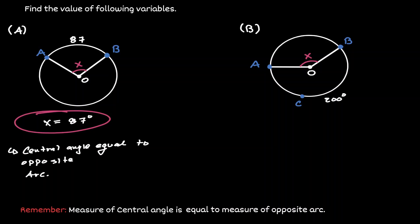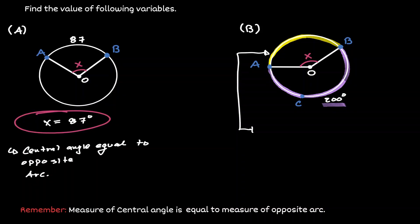In example B, we want to find the measurement of the central angle x. In this case, we do not know the value of the opposite arc. The measurement of 200 degrees is for the arc ACB. If we consider the whole circle, we know that the measurement will be 360 degrees. Then we can claim that the measurement of this minor arc is 360 degrees minus 200 degrees, which equals 160 degrees.